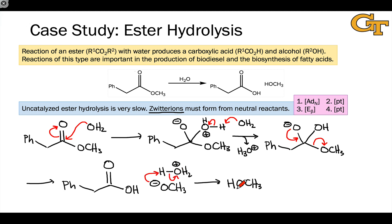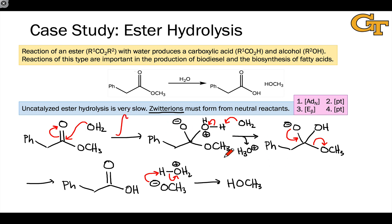Looking at the uncatalyzed mechanism, we see a number of problems. The first nucleophilic addition elementary step involves charge separation, and that's going to be associated with a very high activation barrier — a very high energy intermediate. The problem is charge separation, which results in extremely high activation energies and very slow chemical reactions.